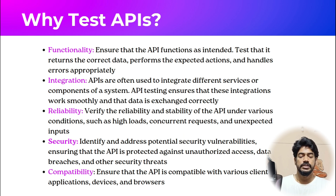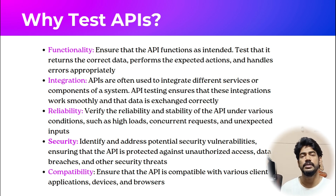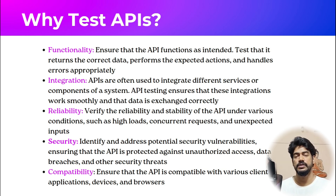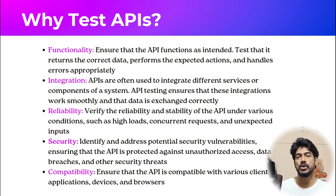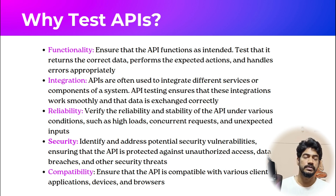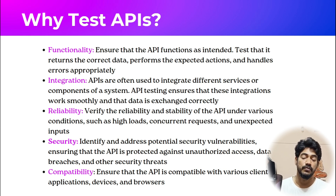And then there's security. In security testing, we can check for authentication, data breaches, and other security threats. For example, we are using ChatGPT-4, which is a paid version with an API key — you need to send a request and get a response based on that key. If the security is weak, anyone could use ChatGPT-4 without purchasing a plan, which would be a huge loss for the ChatGPT team. To avoid such situations, we perform security testing, which can reveal whether unauthorized persons can access the API so we can fix it and avoid financial loss.